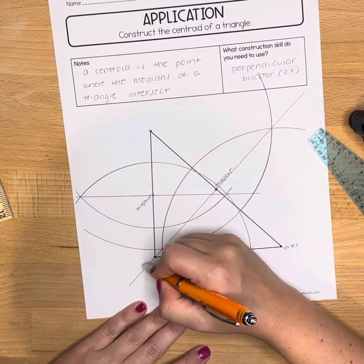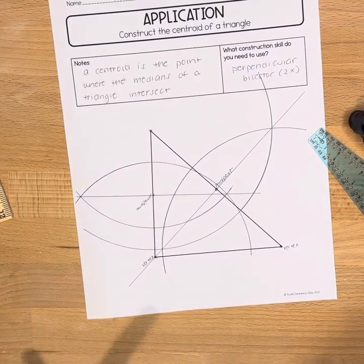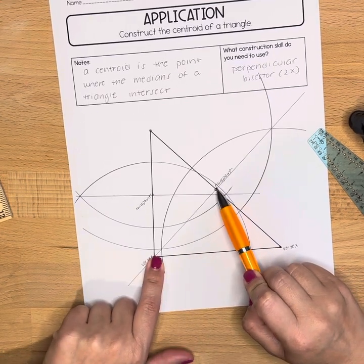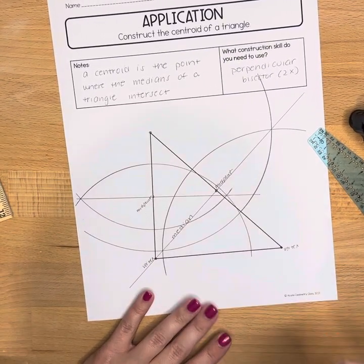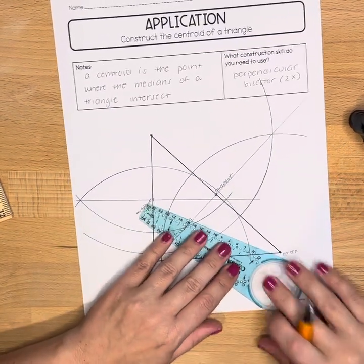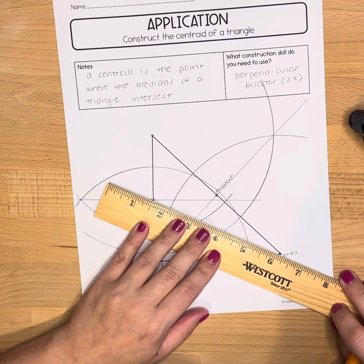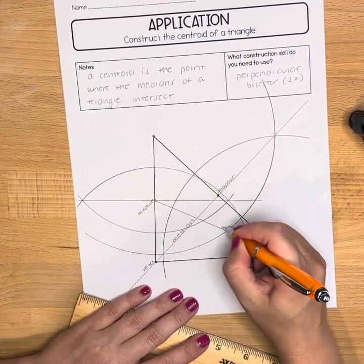And here's the vertex opposite it. Now it happens to actually work out here that the vertex and the midpoint are basically already connected. So that's one of our medians. Here's the midpoint and the other vertex that's opposite it. So I'm going to connect those. I told you I'd do that before. So this is our other median.